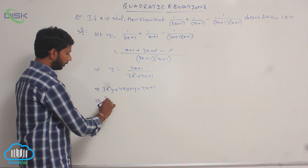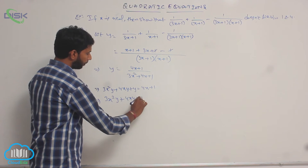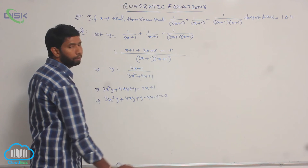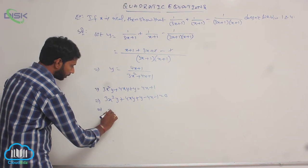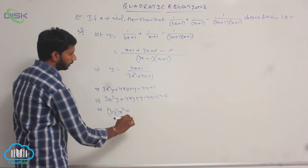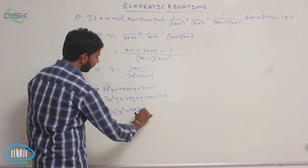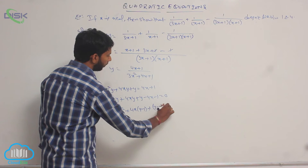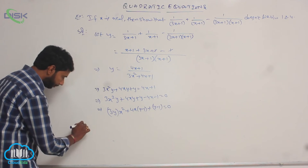Cross multiplying the terms, we get 3yx² + 4xy + y - 4x - 1 = 0. Rearranging, this becomes 3y·x² + (4y - 4)x + (y - 1) = 0.